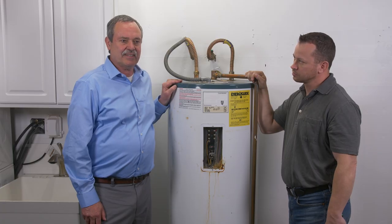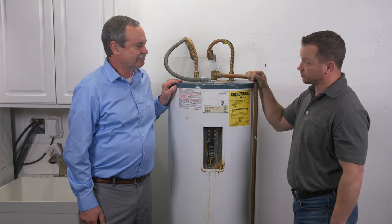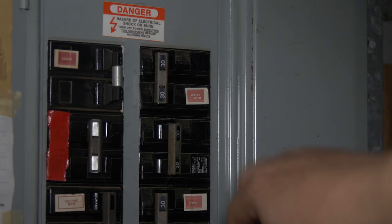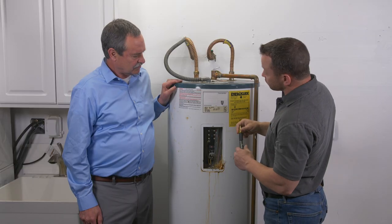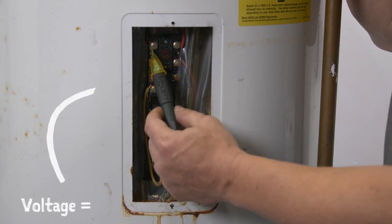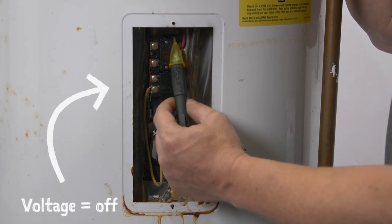Okay, Wade, what do we got to do to get this tank out of here? Well, we need to turn off the circuit breaker for the water heater. Now I'm going to use a voltage detector to make sure that the circuit breaker was marked properly, and in this case it was.